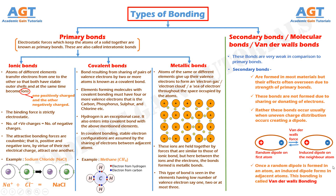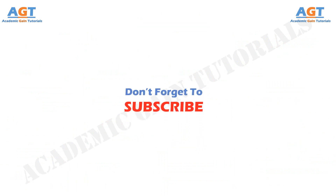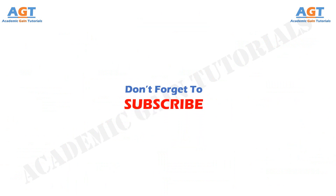Once a random dipole is formed in an atom, an induced dipole forms in adjacent atoms. This bonding is called van der Waals bonding. An example of secondary bonding is seen in nitrogen molecules. So, we have learnt in detail about different types of bonds including primary and secondary bonds with their classifications. Thank you.